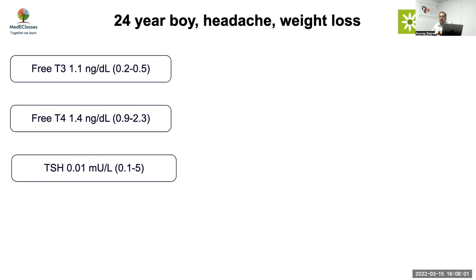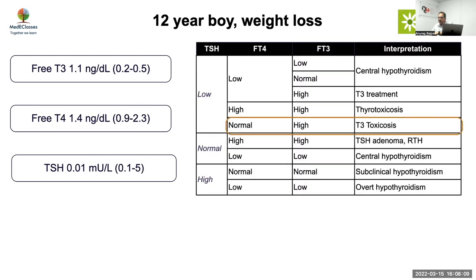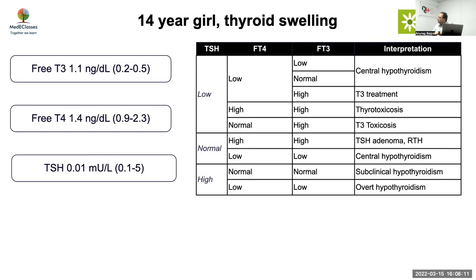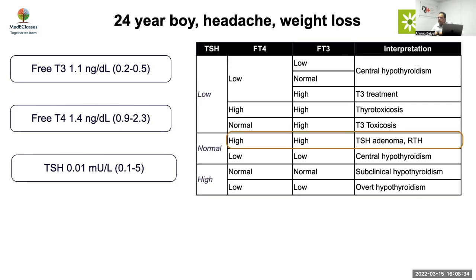Further cases: A 14-year-old girl with thyroid swelling, high T3, normal T4, low TSH — this is T3 toxicosis. Finally, a 24-year-old boy with headache and weight loss, high FT3, normal FT4, normal TSH — this is consistent with a TSH-secreting adenoma, where TSH is not suppressed despite elevated thyroid hormones.